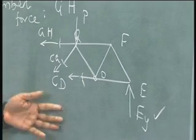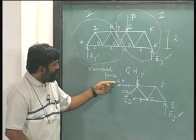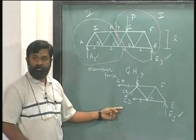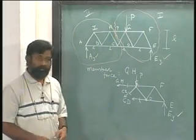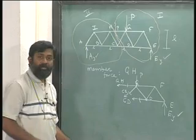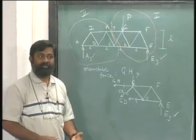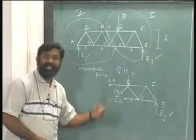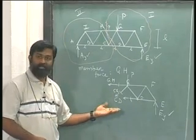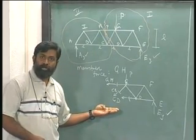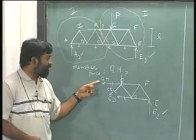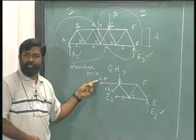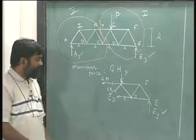How many forces are known here? GH is not known, CG is not known, CD is not known but I want only GH. Earlier we have done this particular exercise of finding out a member force directly. In this case, what joint will you take or what point will you take in such a way that I can get a single equation in GH.